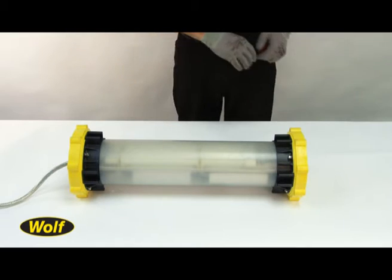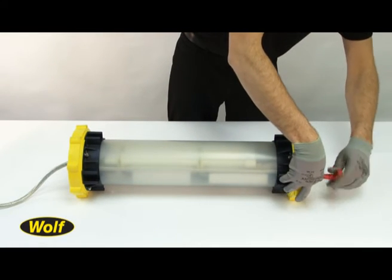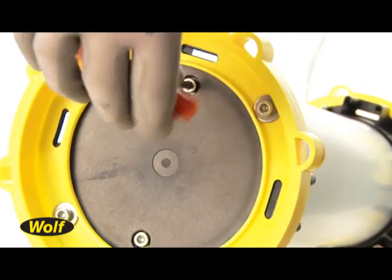Firstly, remove the fluorescent lead lamp end cap opposite to the cable input, retaining the bolts and seals.